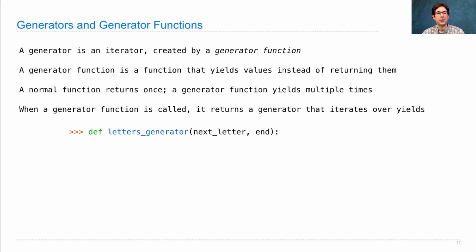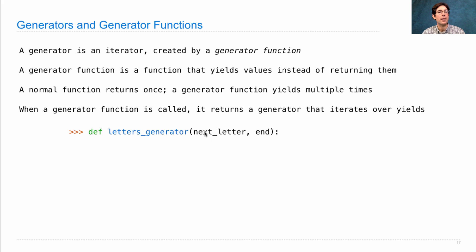Let's see how this actually works. Instead of writing a letter iter — the iterator over letters — we're now going to write a generator. An iterator class and a generator function serve much the same purpose. We give it the next letter that we want to yield and when we want to end. While next letter is less than end, we yield the next letter.